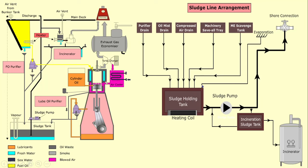After that, if you have an incinerator on board, it may happen that you transfer it to the incinerator such as a waste oil tank and you burn some in the incinerator. If your incinerator is not in proper functioning or your company tells you to give it to shore, in that case there is also a line from a sludge holding tank to the shore. This is how all the sludge generated on board is collected in a sludge holding tank.